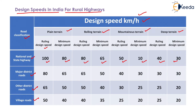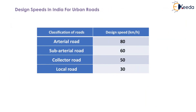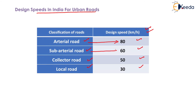For limited access facilities like expressways, a higher value is desirable; 120 kilometers per hour is commonly adopted. For urban streets, the design speed adopted in India is: arterial road — 80 km/h, sub-arterial road — 60 km/h, collector road — 50 km/h, and local road — 30 km/h.